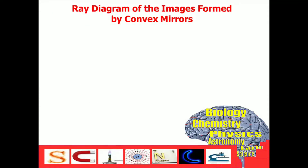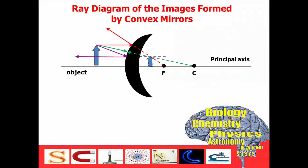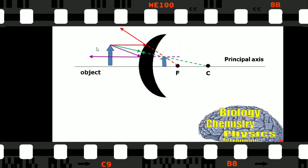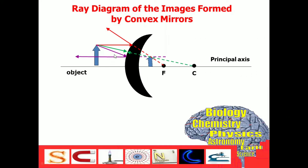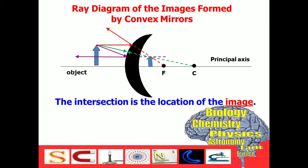This time, let's discuss the ray diagram of the images formed by convex mirrors, and it looks like this. As you see, the light rays here are spread out or diverge. And as you can see, the image is formed behind the mirror. The intersection of the extended light rays is where the image occurs.